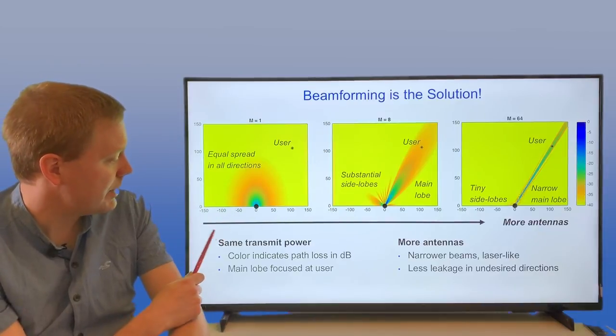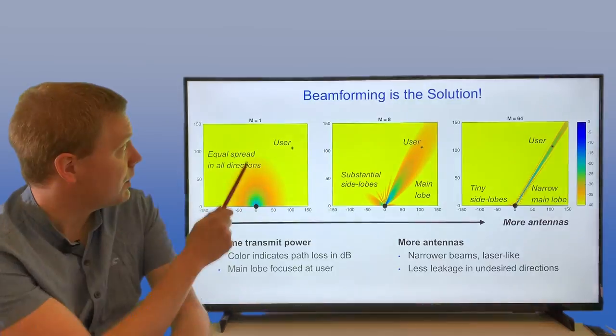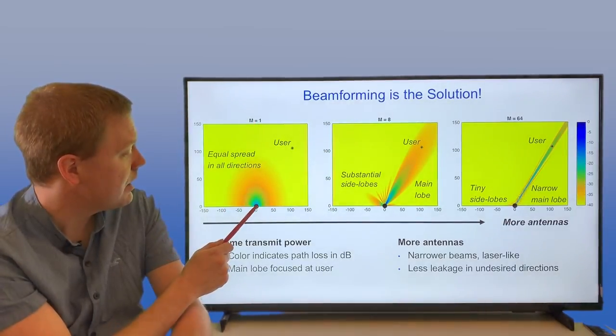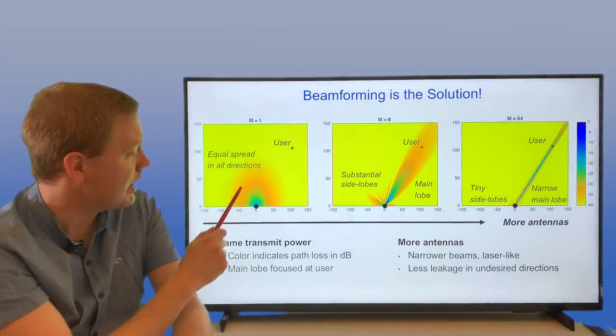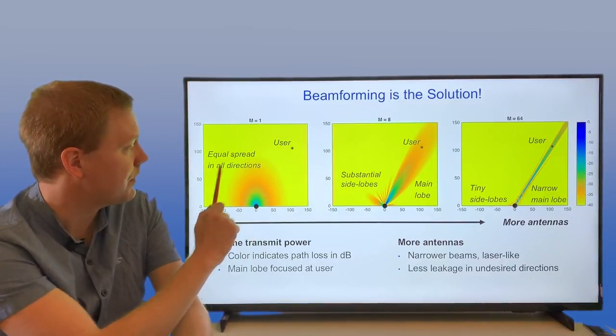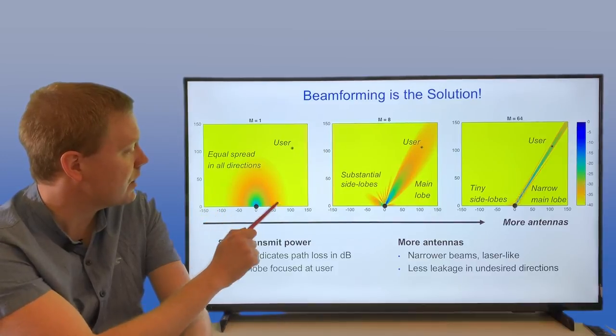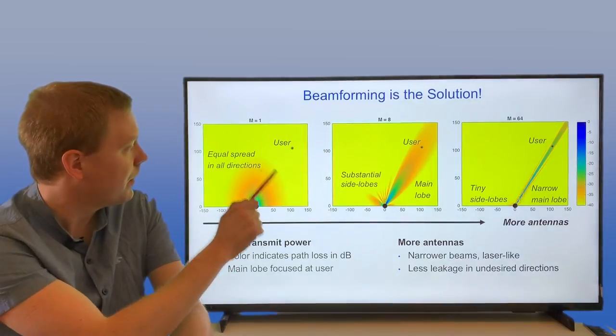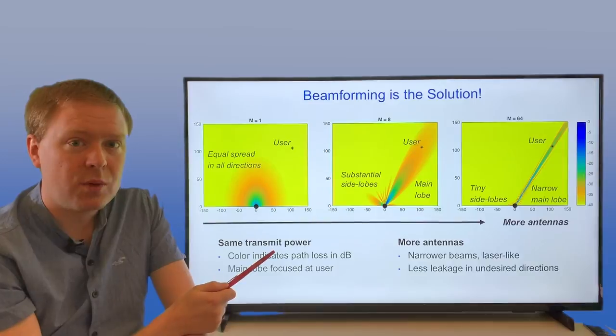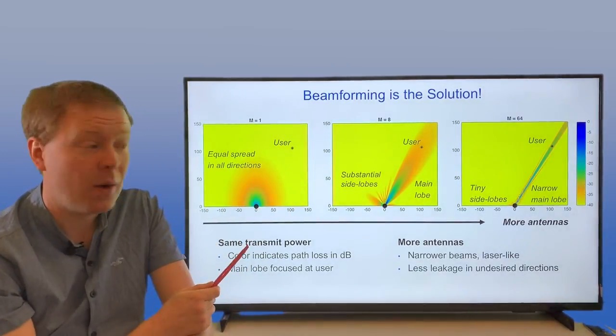If we have multiple antennas, we can focus energy. Here's a case with only one antenna - we have a transmitter here and a desired user here. This heat map shows how much energy you can observe at different locations. In this case, the energy is spreading out equally, so it looks like a circle. Any place at the same distance will receive the same amount of power.